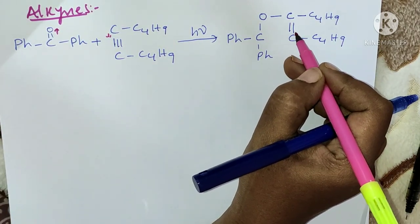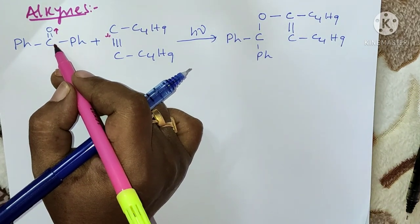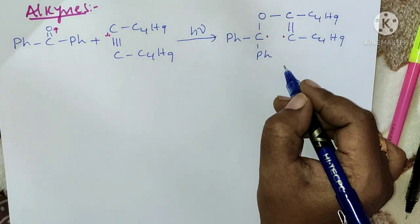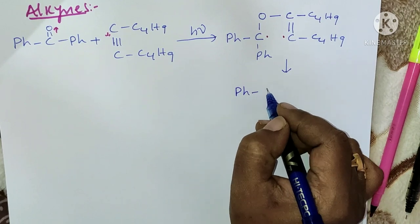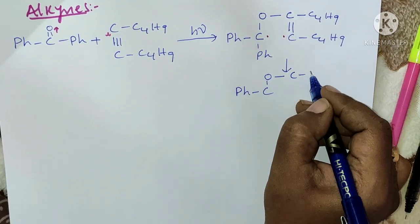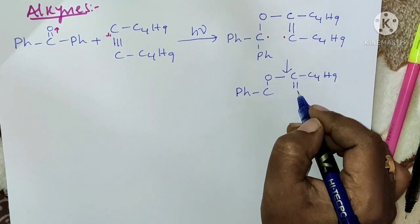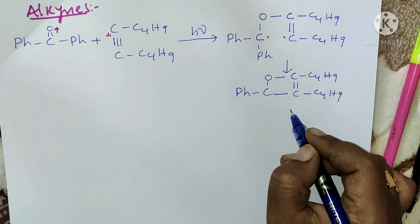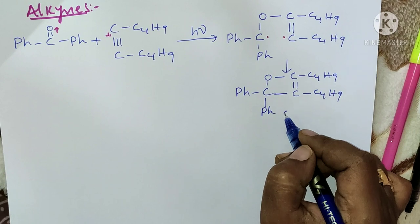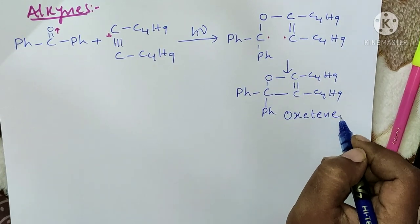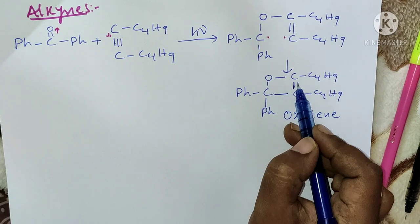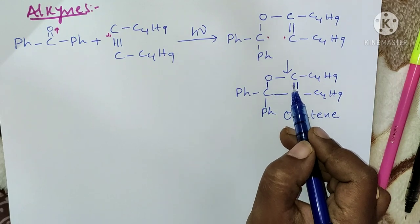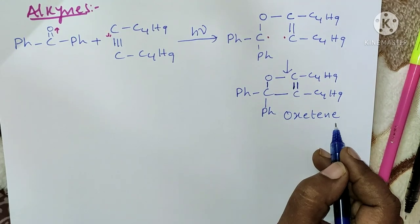The remaining two electrons then combine together to give an oxetene — a four-membered ring with a double bond inside it. Unlike the previous oxetane (which had all single bonds), here it contains a double bond, so it is called oxetene.